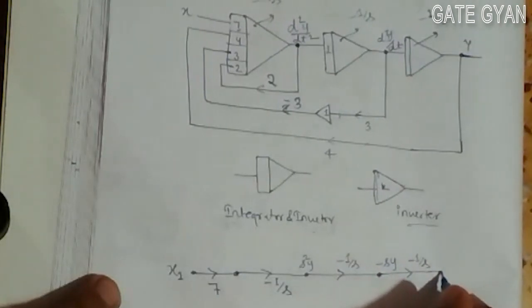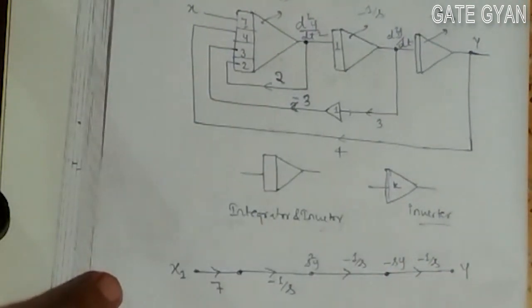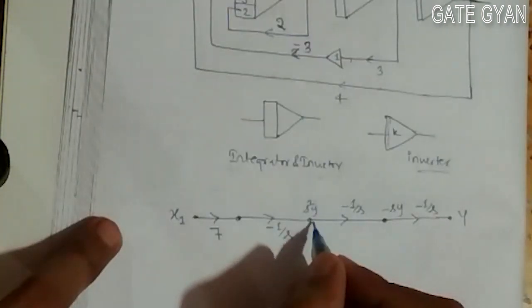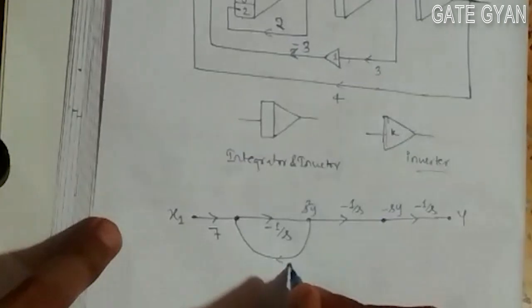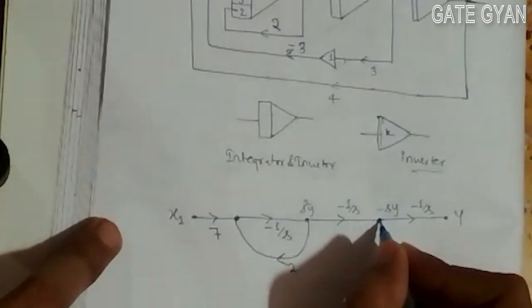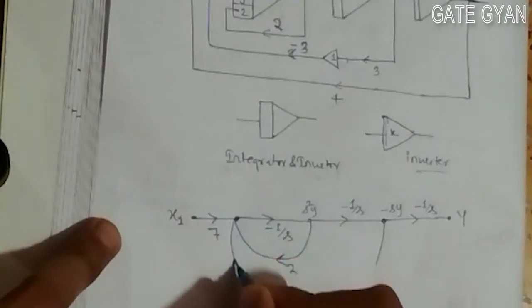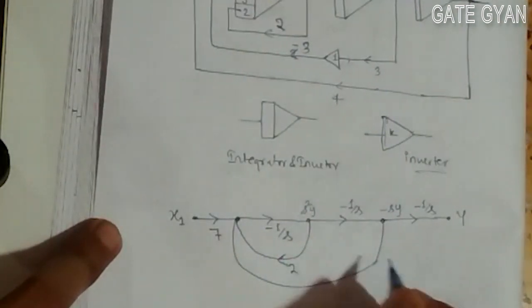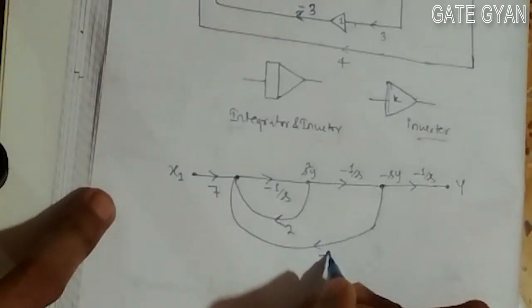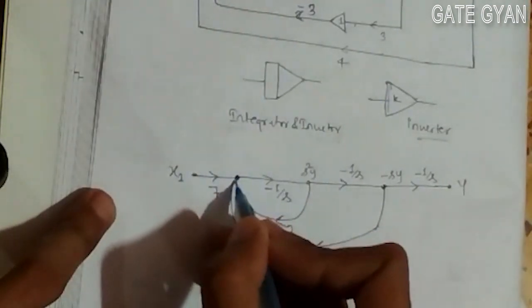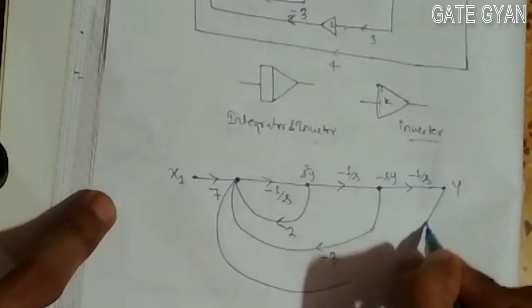And here it's y. Now the gains getting multiplied with the system: this is my gain of 2 from this point, gain is -3 as it is connected with inverter circuit.